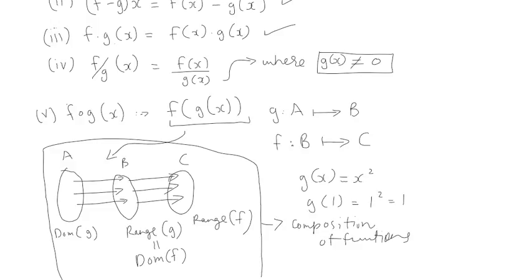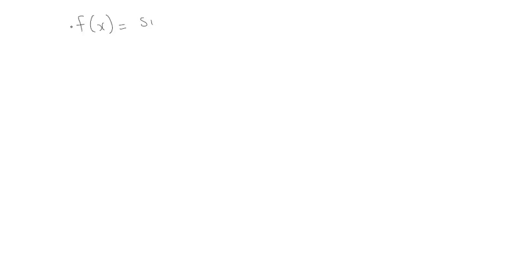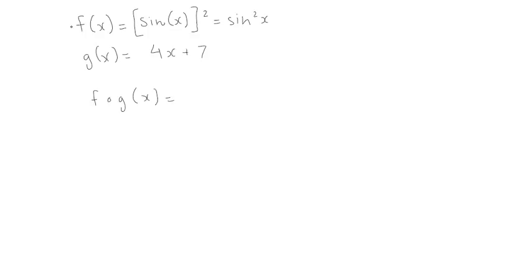Let's do a particular example to illustrate this concept. Let's make f of x equal to sine squared x, and we have another function g of x that's a linear function, 4x plus 7. Let's try to find f composed with g of x. This turns out to be the same as f of g of x. Before plugging anything into f, we need to know what g of x is. Since g of x corresponds to 4x plus 7, in the domain of f will reside 4x plus 7, because 4x plus 7 is giving us the range of g, which coincidentally turns out to be the domain of f.